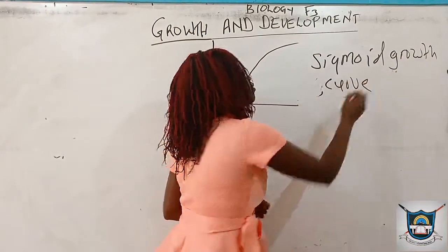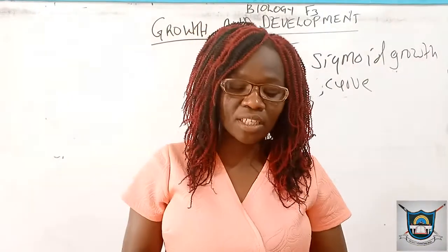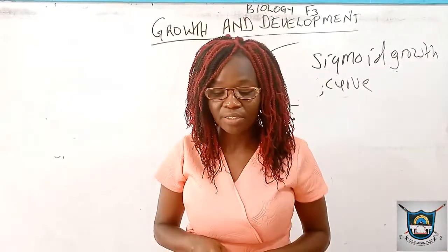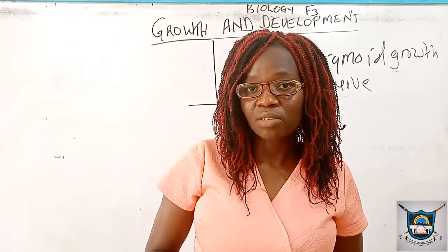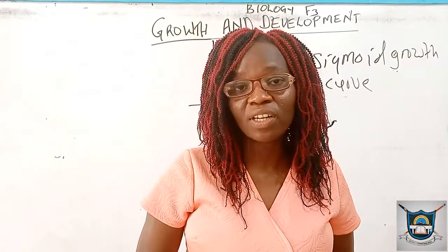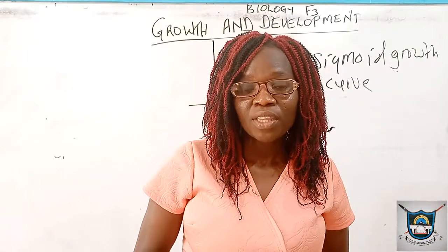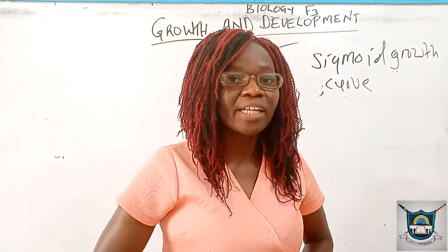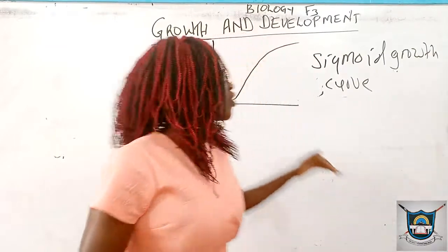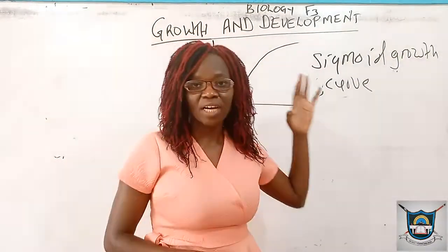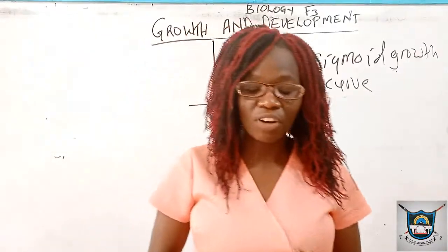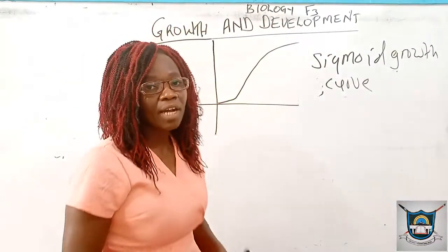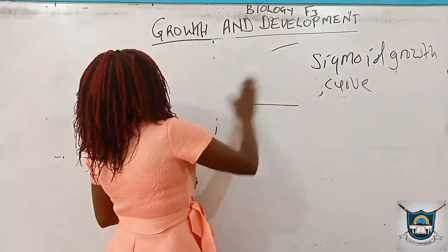The sigmoid growth curve does not apply to all organisms. We have some organisms which produce a different type of curve, because in different organisms growth occurs at different times. The sigmoid curve means growth occurs throughout the life of the organism, but in some organisms like the insects — the arthropods — this is not the case.